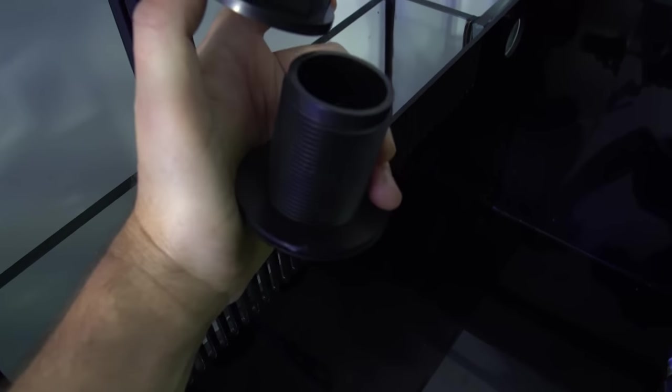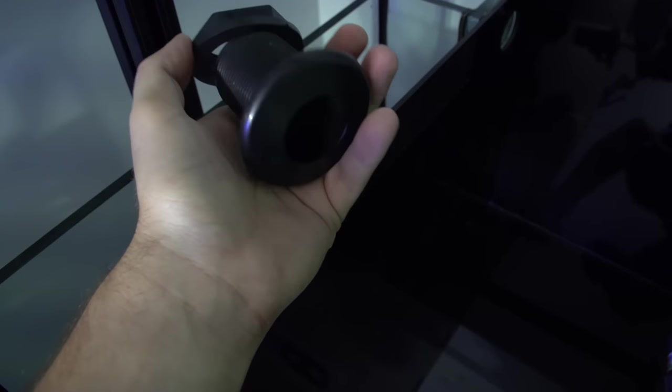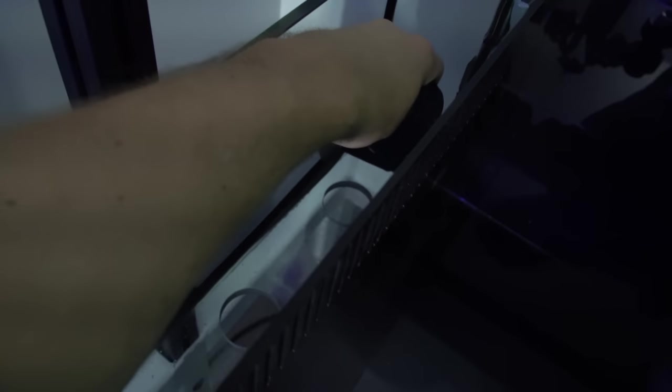First step before we install the bulkheads, I always like to give things a quick little wipeout, get out any little dust or particles that built up. Then we are gonna install our bulkheads, so screw the bottom off. We do have this little gasket or flange. The flange always wants to go on your wet side of the tank. So in this case, the wet side would be the inside of our overflow box.